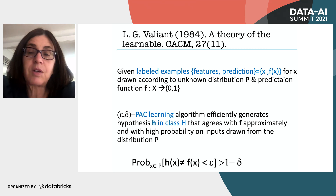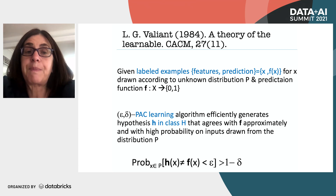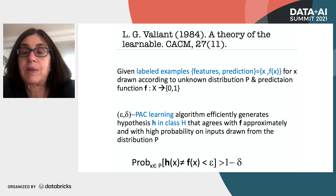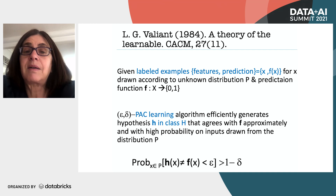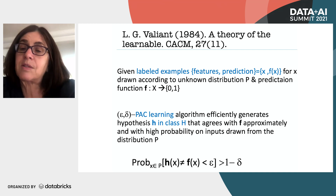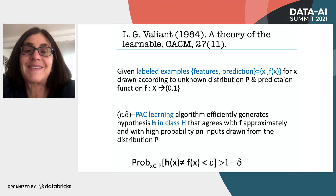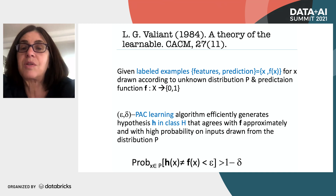In the case of bail, features might be where the person lives, what the crime was, what their history is — paired with a prediction: should they go out on bail or not? Mathematically, I write this as x meaning features, and f(x) which is either 0 or 1 — go out on bail or don't. I give lots of examples from past decisions, maybe of judges.